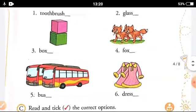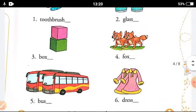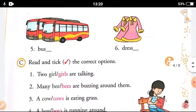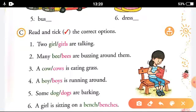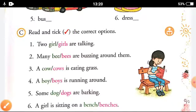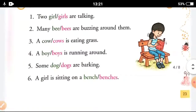Next is to tick the correct option. Two girls are talking. See, if two is there, it's more than one, so you will be ticking girls. Many - many is more than one, so which will be correct? B-E-E-S, bees is correct. Similarly you have to do the rest. A cow or cows - C-O-W-S is written here, so 'a' is one, so the answer will be cow. This is how you have to do this exercise.